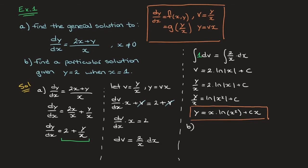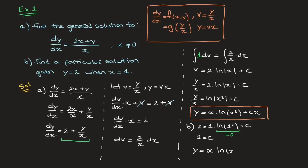We move on to question b, in which we need to find a particular solution given y equals 2 when x equals 1. To find the particular solution, all we have to do is copy the general solution and replace y by 2 and every x by 1, then solve for c. This becomes 2 equals 1 times ln of 1 squared plus c times 1. But ln of 1 equals 0, so we quickly see that c equals 2. We write the particular solution by copying the general solution and replacing c by 2: y equals x times ln of x squared plus 2x.